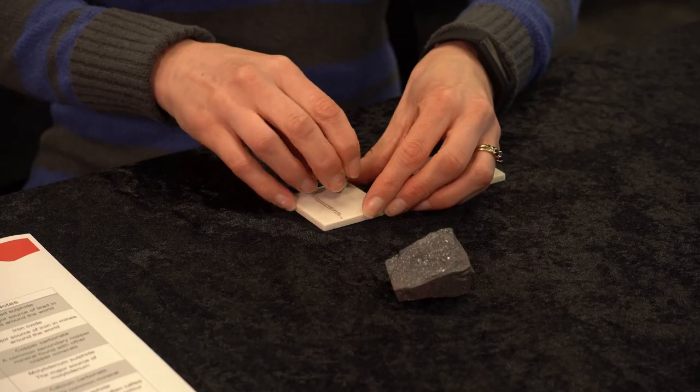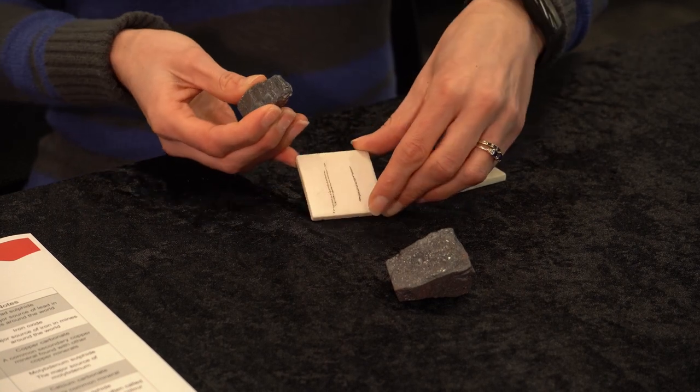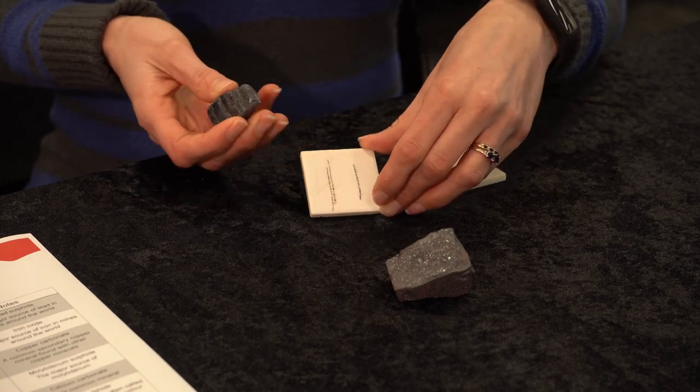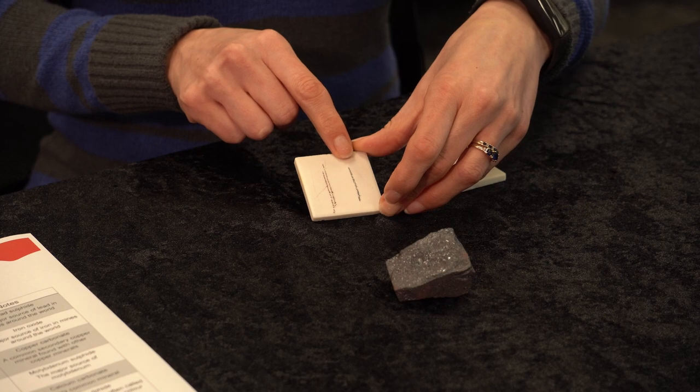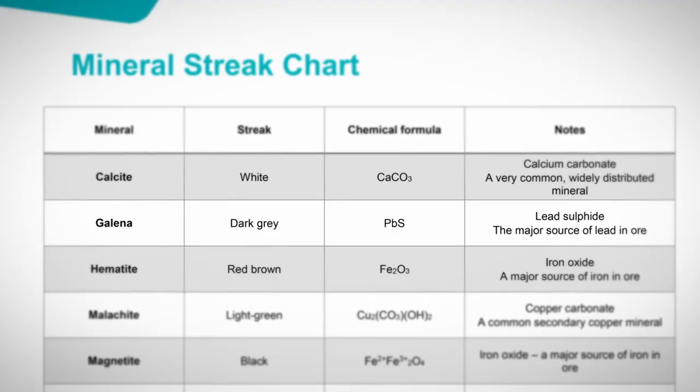If I do the same thing with my second sample — hold the streak plate firmly, run the sample across — this specimen leaves behind a dark grey streak. If I use my mineral identification chart again, a lead grey streak suggests a sample of galena.